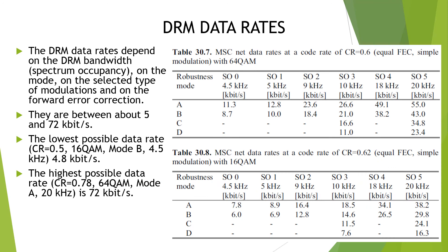DRM data rates depend on the DRM bandwidth (spectrum occupancy), the mode, the selected type of modulation, and the forward error correction. They range between approximately 5 and 72 kilobits per second. The lowest possible data rate — CR=0.5, 16-QAM, Mode B, 4.5 kHz bandwidth — is 4.8 kbps. The highest possible data rate — CR=0.78, 64-QAM, Mode A, 20 kHz bandwidth — is 72 kbps.